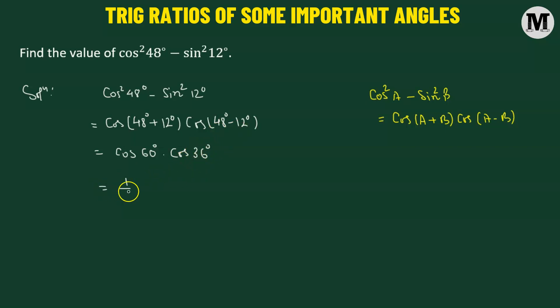Cosine of 60, that's one half. And cosine of 36 degree, that's square root of 5 plus 1 divided by 4. Which means our final value comes out to be square root of 5 plus 1 divided by 8. Now this is going to be the value of cosine squared 48 degree minus sine squared 12 degrees.